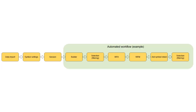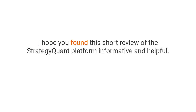It is also worth noting that using automated workflows, almost all functional sub-modules can be arranged in any desired sequence. By dragging and rearranging functional blocks, you can create customized strategy building and validation sequences. The figure depicts an example of an automated workflow in which all steps are completed fully automatically in a selected sequence.